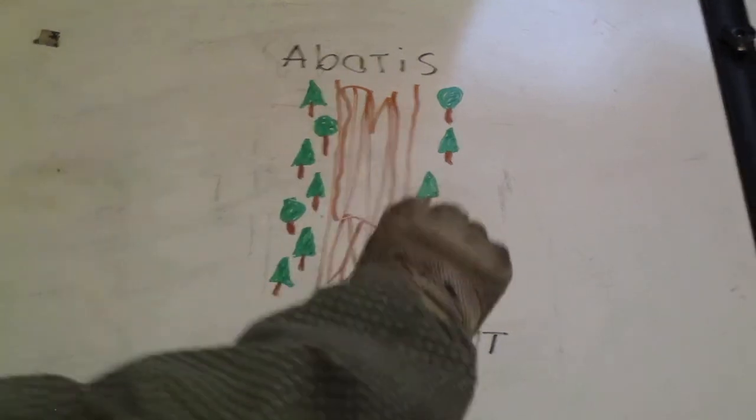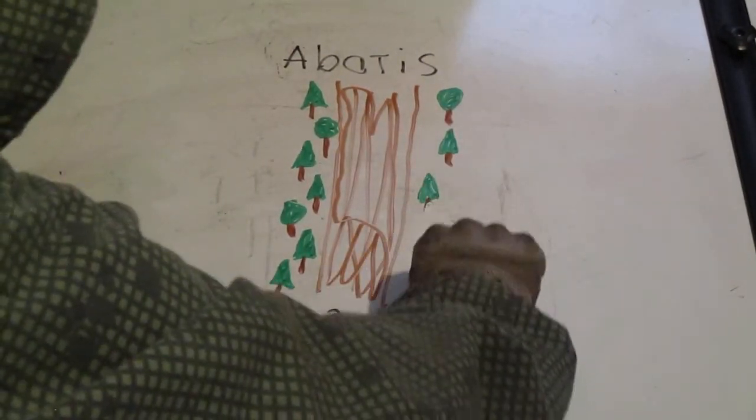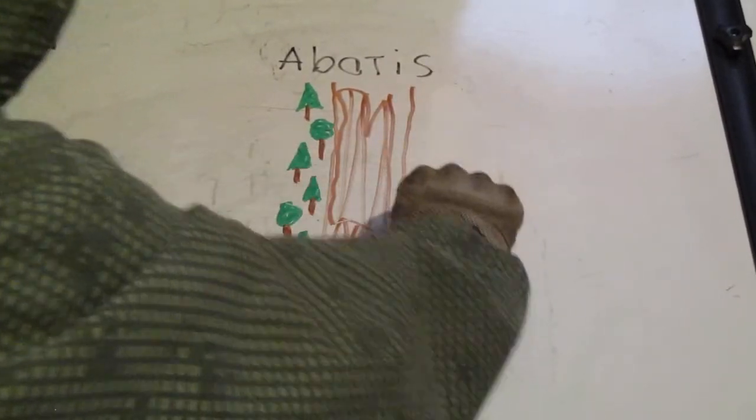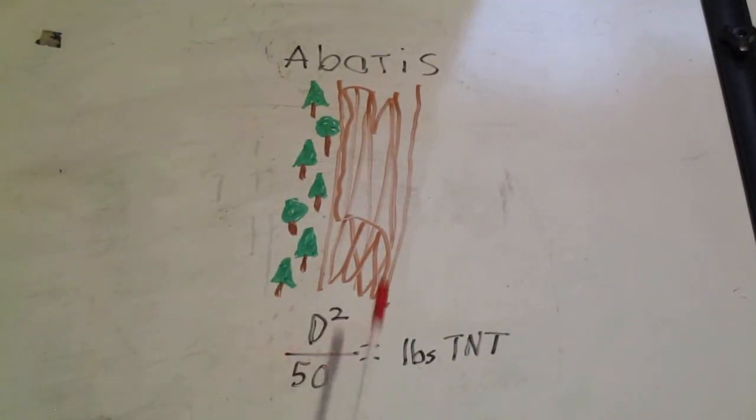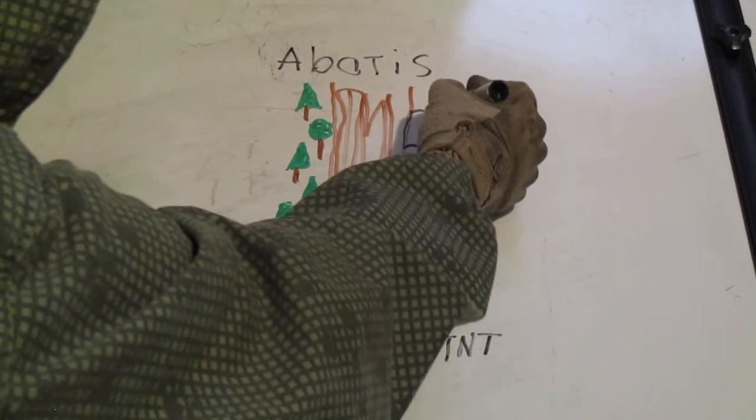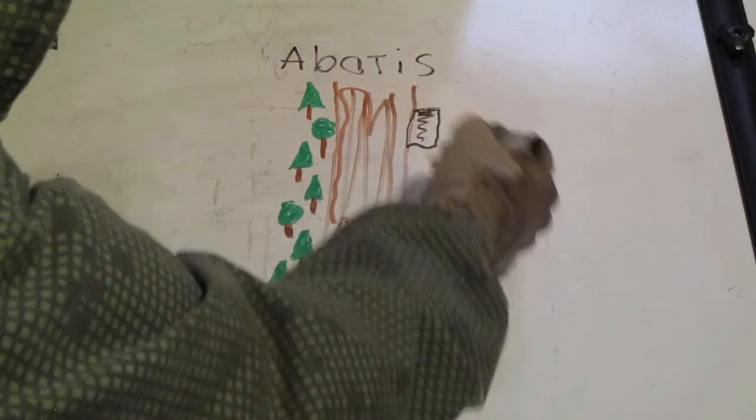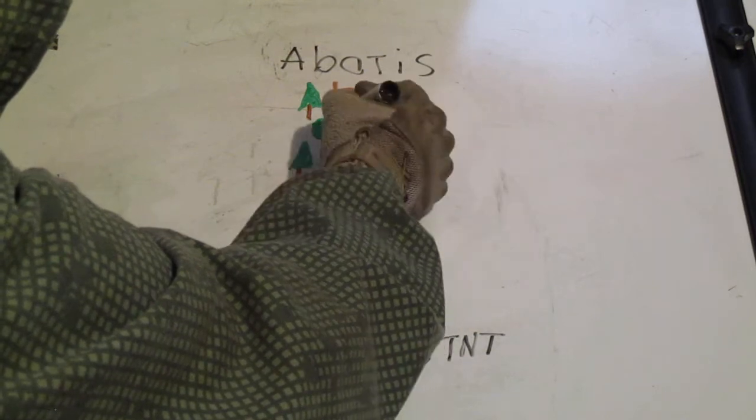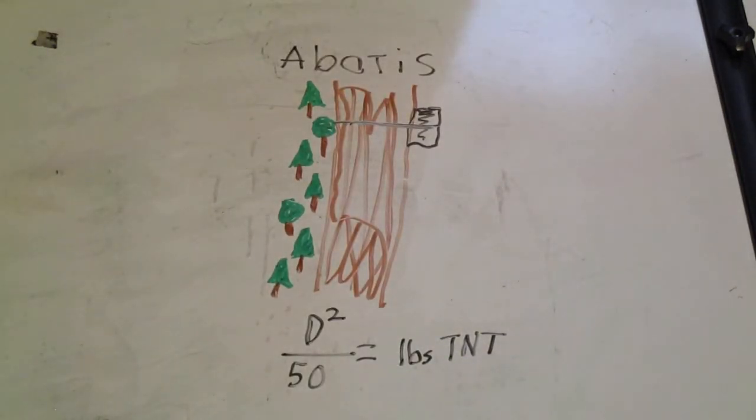We'll just use the same diagram here. We'll say that our roadway here is now the tree trunk. So approximately five foot up the side of the tree we will put our explosive charge. This is an external charge that goes on the outside of the tree. It gets primed and tied into our line main or ring main.